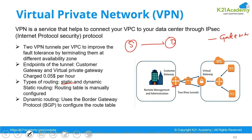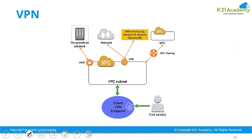In static routing, you specify the source, destination, and which gateway to use to go out. If routes are learned automatically through dynamic methods, that is known as dynamic routing, and BGP is supported for that on these VPNs. These are site-to-site VPNs we are talking about.